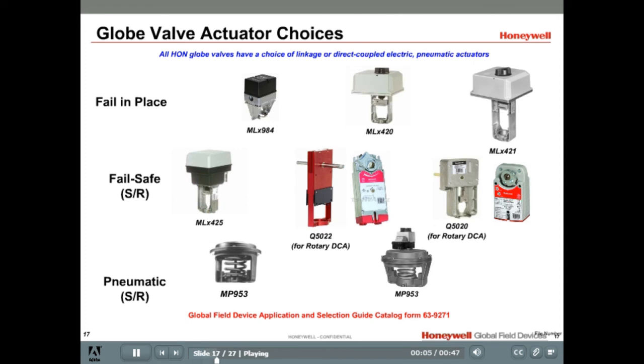Honeywell globe valves can be controlled either with an electric actuator or a pneumatic actuator. When an electric actuator is used it may either be a linear actuator or a rotary direct coupled actuator with linkage. Both options offer fail in place or fail safe options. Fail safe refers to the actuator's ability to return to its normal position when the actuator is no longer powered. For more information refer to the global field device application and selection guide catalog for number 63-9271 for a complete list of actuators and valves that are compatible.